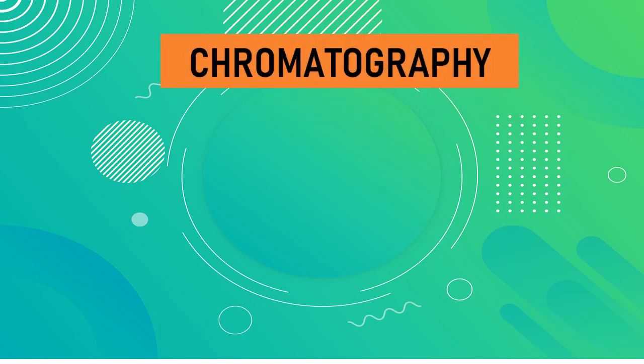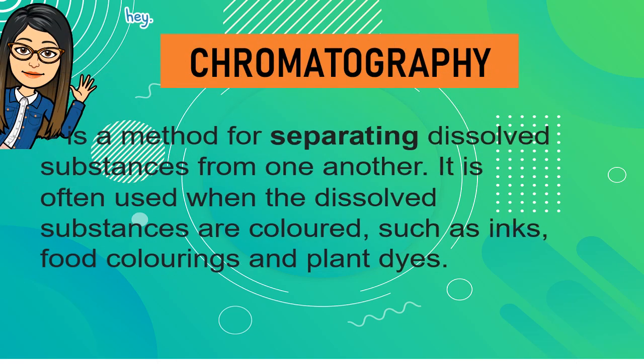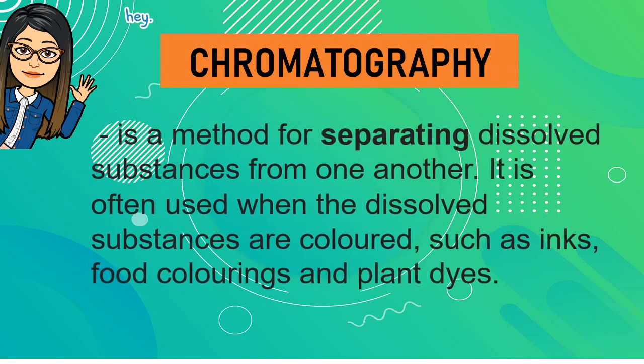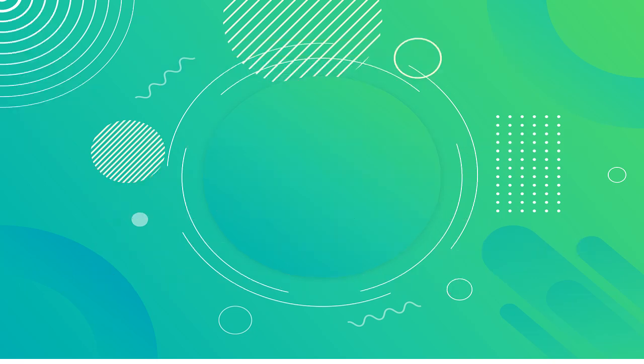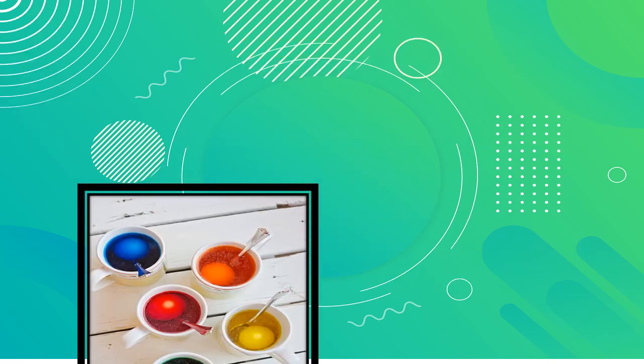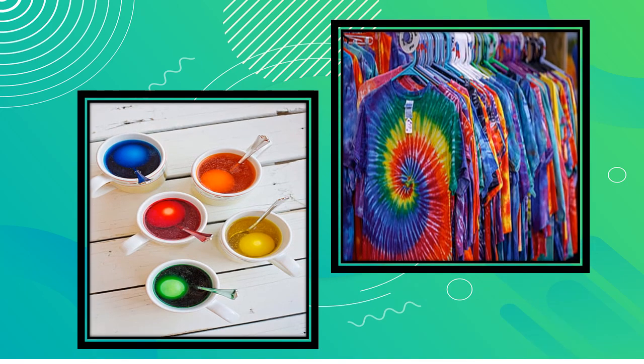The last method is chromatography. Chromatography is a method of separating dissolved substances from one another. It is often used when the dissolved substances are colored, such as inks, food colorings, and plant dyes. One example of chromatography is dyeing clothes, where the color or ink dissolved in water is transferred to the cloth.